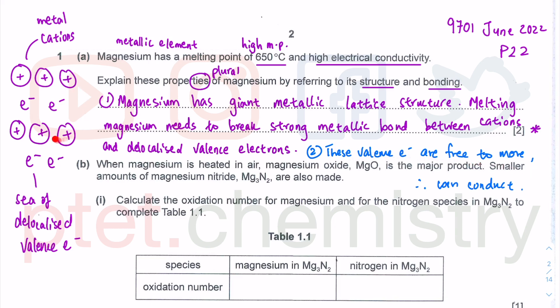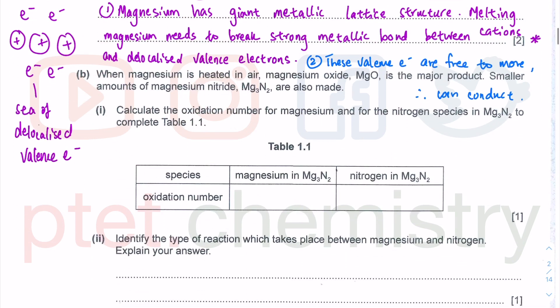It's not enough to just say magnesium is a metal, therefore it can conduct. You have to go back to the metallic structure and think about the sea of delocalized valence electrons. They are free to move.